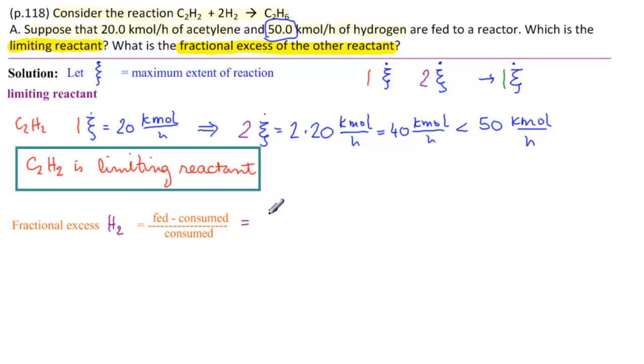What was fed? 50 kilomoles per hour. What was consumed? 2ξ̇ over 2ξ̇. And we actually have 2ξ̇ already worked out. That's 40. So that's 50 minus 40 over 40. All the units match and are cancelled, and we get 10 over 40.